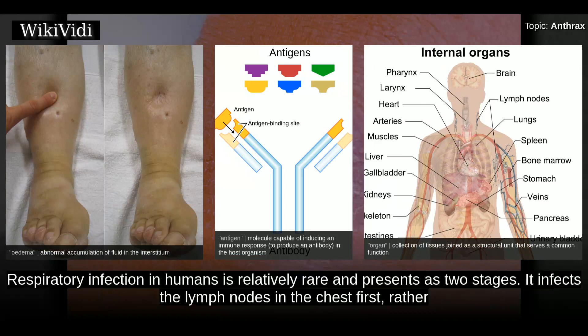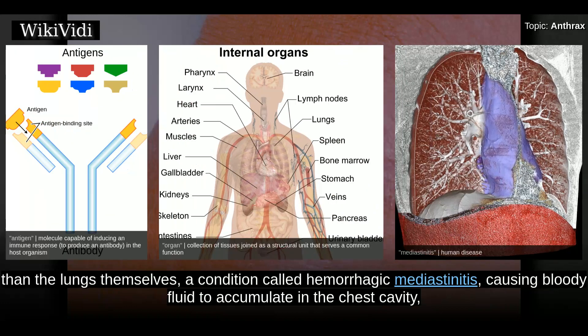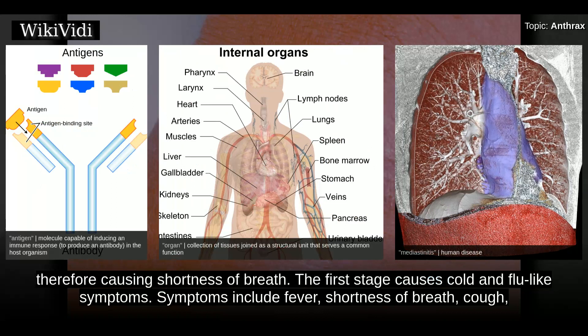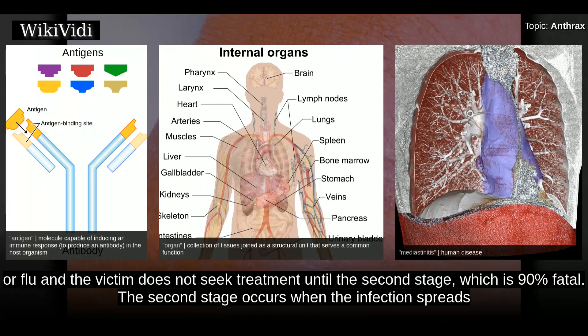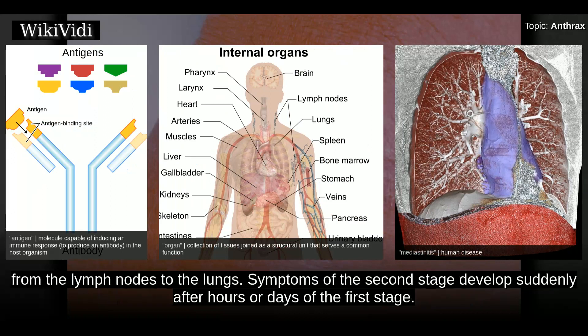Respiratory infection in humans is relatively rare and presents as two stages. It infects the lymph nodes in the chest first, rather than the lungs themselves, a condition called hemorrhagic mediastinitis, causing bloody fluid to accumulate in the chest cavity and therefore causing shortness of breath. The first stage causes cold and flu-like symptoms, including fever, shortness of breath, cough, fatigue, and chills. This can last hours to days. Often, many fatalities from inhalational anthrax occur when the first stage is mistaken for the cold or flu and the victim does not seek treatment until the second stage, which is 90% fatal.